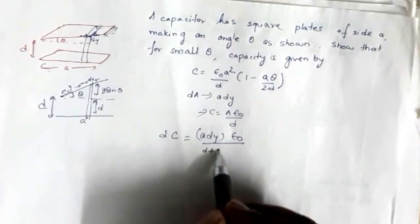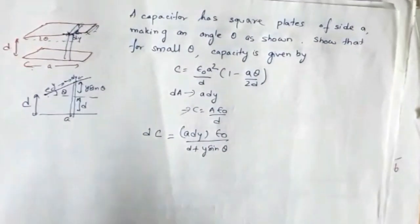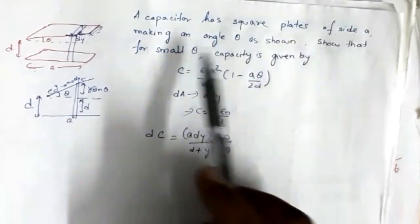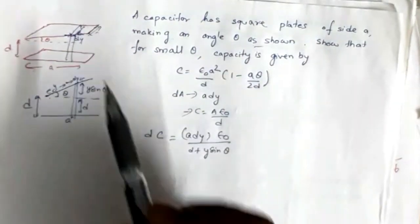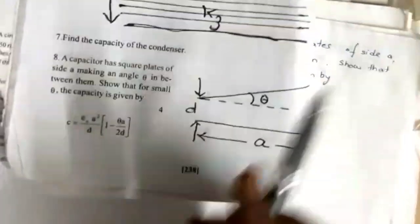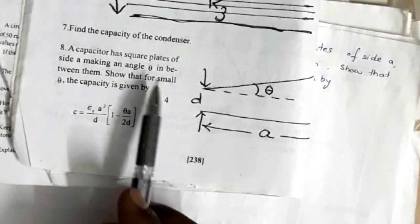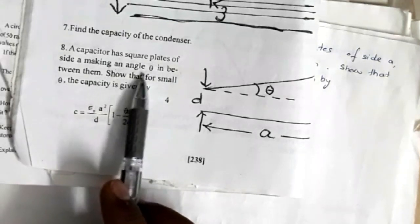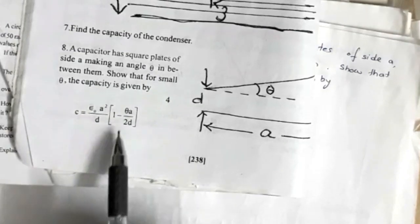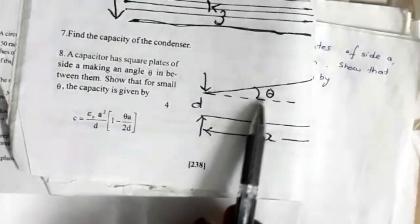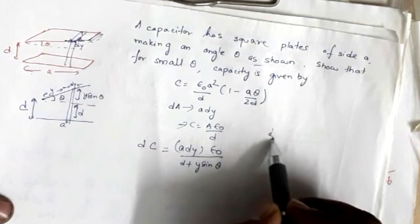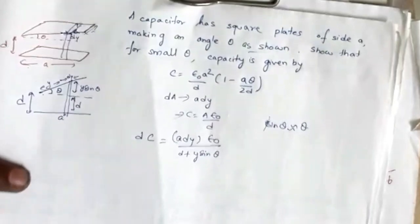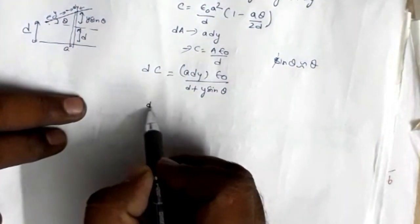Reading the question again: a capacitor has a square plate of side a making an angle theta as shown. It is also given in the original question that theta is very small. The question says: show that for small theta, the capacitance is a certain expression. So since theta is very small, for small theta I can replace sinθ with θ.